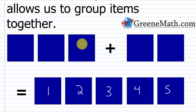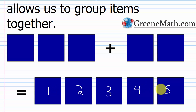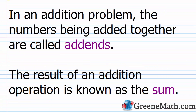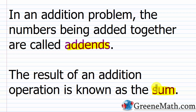I've combined this group of three boxes with this group of two boxes and it gave me a total of five boxes. So in an addition problem, the numbers being added together are called addends, and the result of an addition operation is known as the sum.